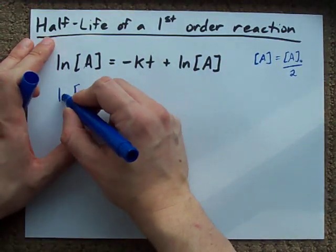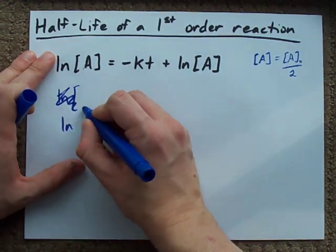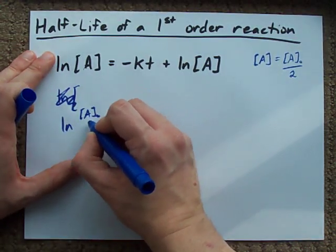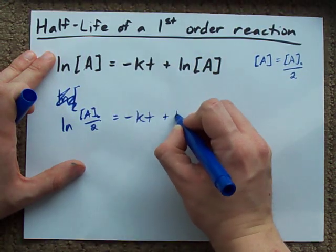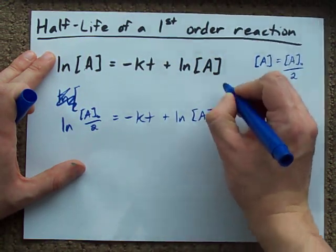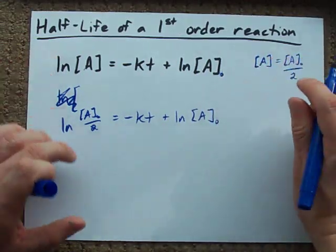The ln of the initial concentration divided by 2 equals negative kT plus the ln of the initial concentration. Oops, I forgot that there.